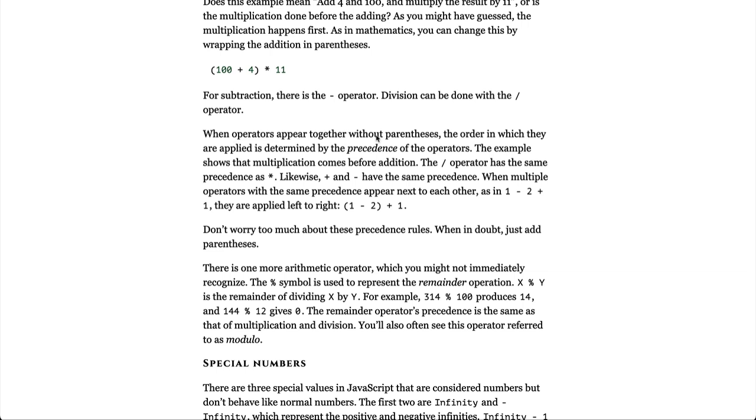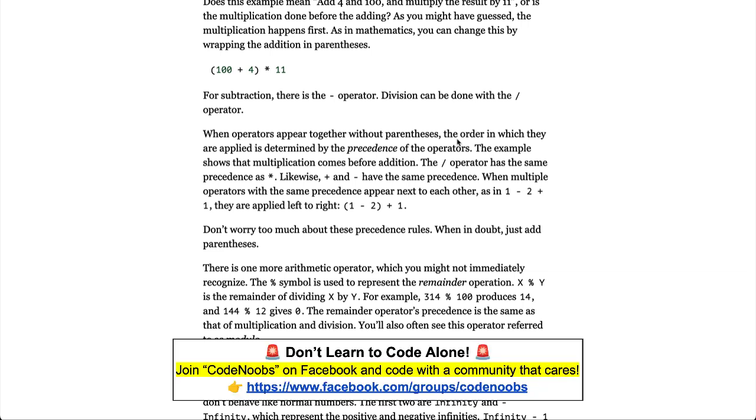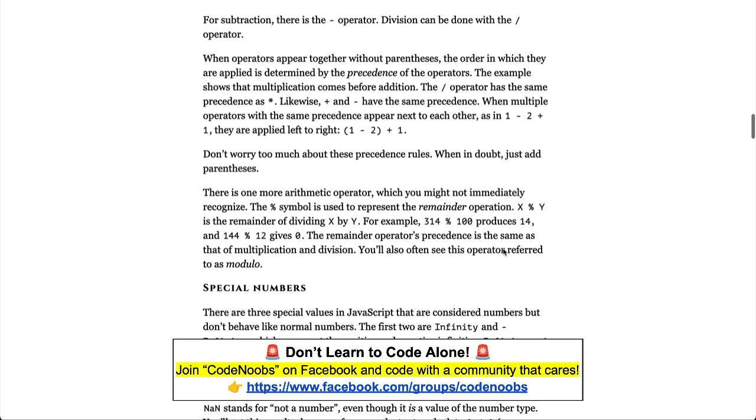When operators appear together without parentheses, the order in which they are applied is determined by the precedence of the operators. The example shows that multiplication comes before addition. The slash operator has the same precedence as asterisks. Likewise, plus and minus have the same precedence. When multiple operators with the same precedence appear next to each other, as in 1 minus 2 plus 1, they are applied left to right, 1 minus 2 and then plus 1. Don't worry too much about these precedence rules. When in doubt, just add parentheses.